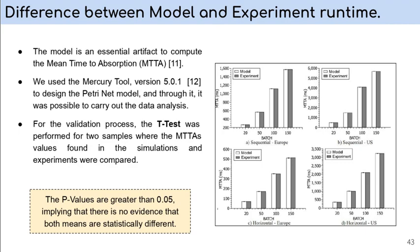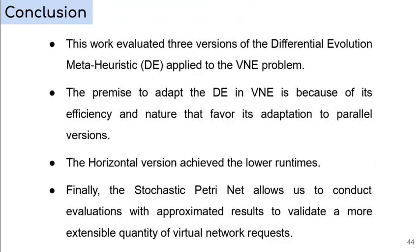This work evaluated three versions of differential evolution meta-heuristics applied to the VNE problem. The premise to adapt the differential evolution in virtual network embedding problems because of its efficiency and nature that favor its adaptation to parallel versions. The horizontal version achieved the lower runtimes. Finally, the stochastic P3Net allows us to conduct evaluations with approximated results to validate a more extensible quantity of virtual network requests.